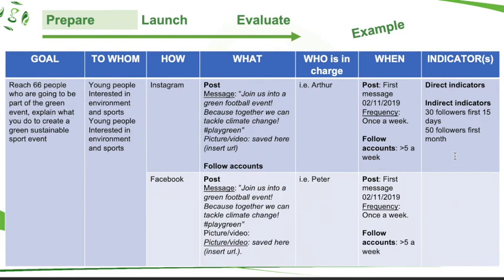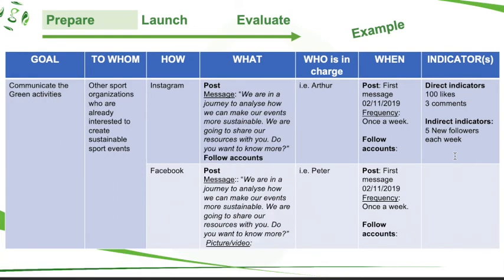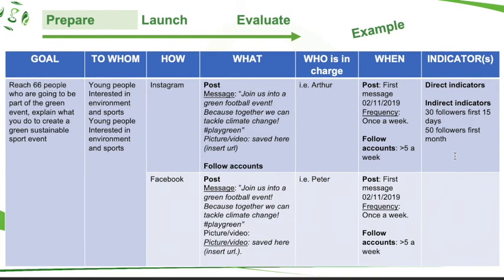These are the indicators we want to reach — this is just an example. If you have more than one goal, here we have two: one is to communicate the green activities and the second is to reach volunteers. For each goal, you have a different kind of indicators — or maybe you merge them — but you should certainly define to whom and what channels you want to use.